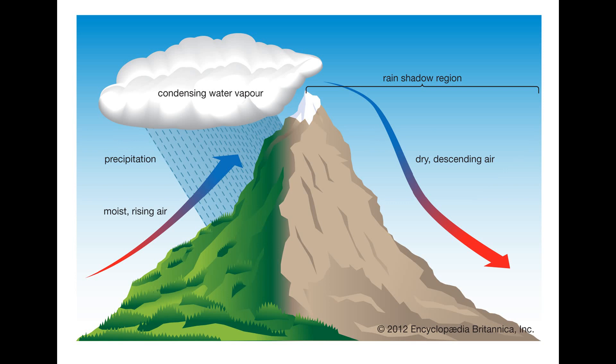The windward side of the foothills of the Himalayas, like Cherrapunji, is the best example of the windward side.